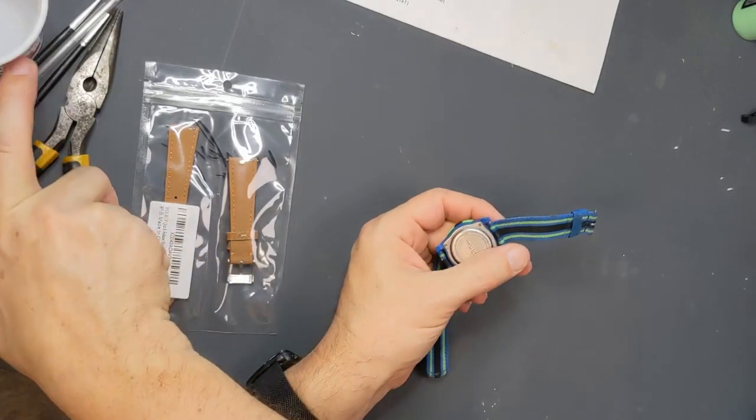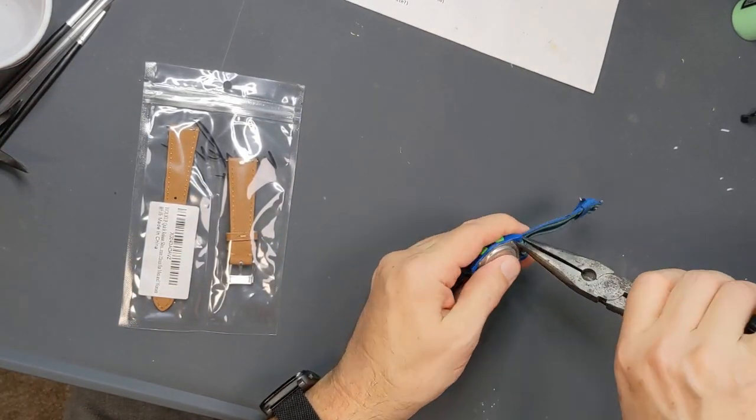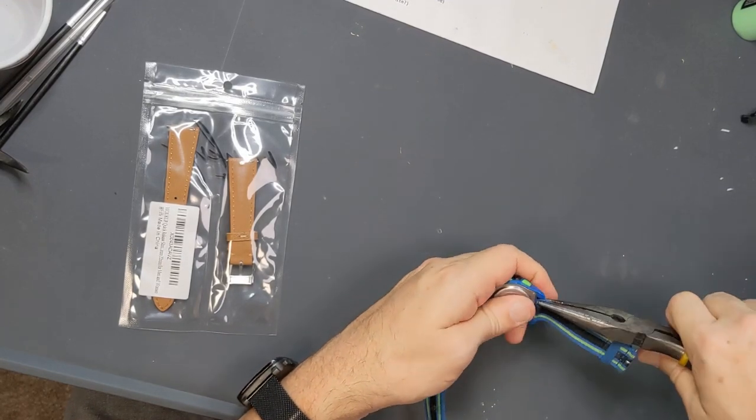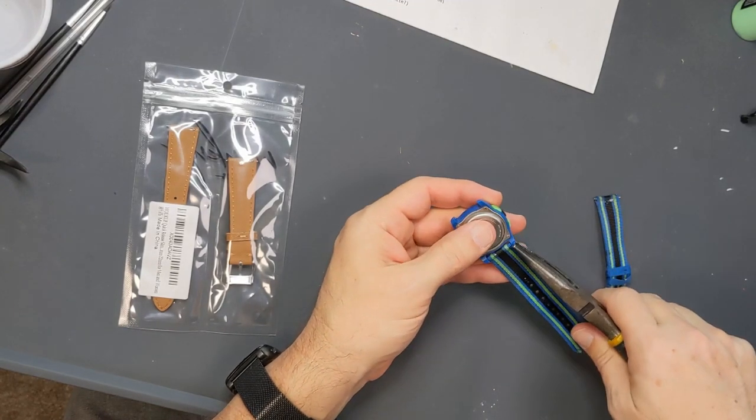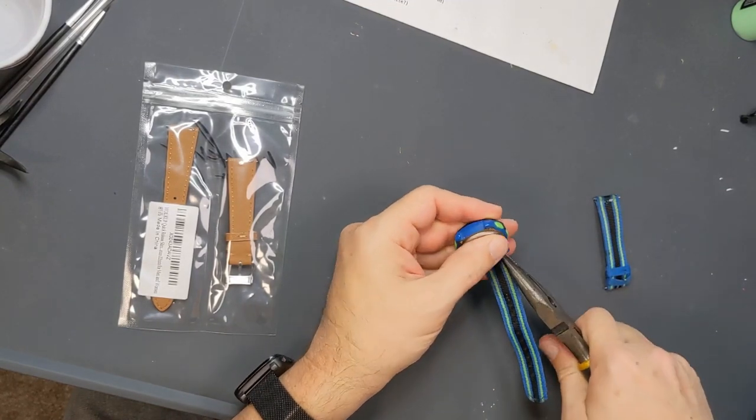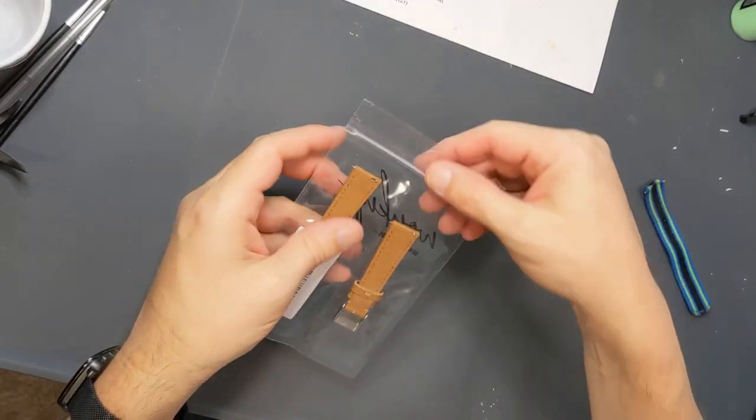However, if you don't have those specialized tools, if you're willing to break the pins, you can simply grab the thing with a pair of pliers and kind of twist it. And so I've bent the pin and so that pin is no longer going to be useful. But that's okay because this guy comes with its own pins.